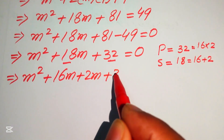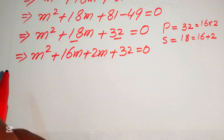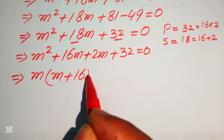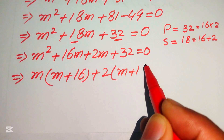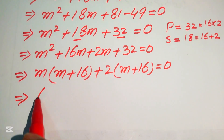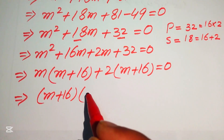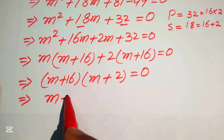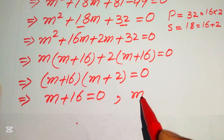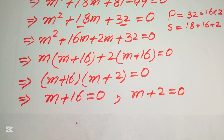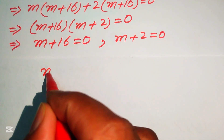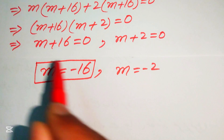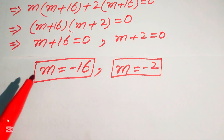So we have m² + 16m + 2m + 32 = 0. Taking m common from the first two terms gives m(m + 16), and taking 2 common from the last two terms gives 2(m + 16). This factors as (m + 16)(m + 2) = 0, giving m = −16 and m = −2 — the same answers as method one.